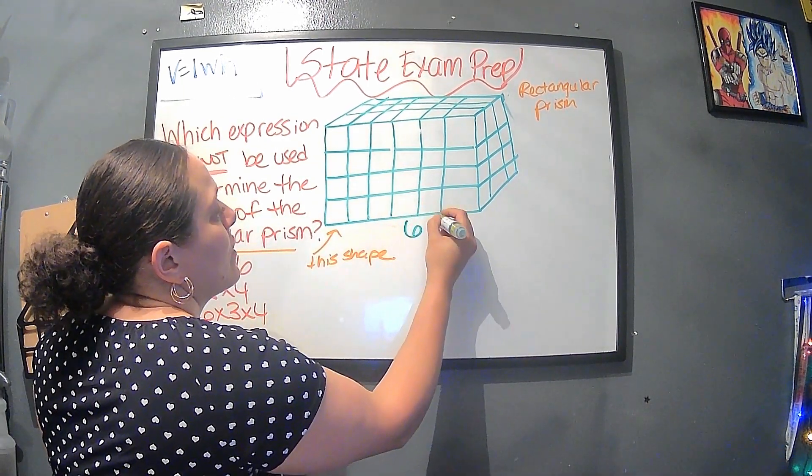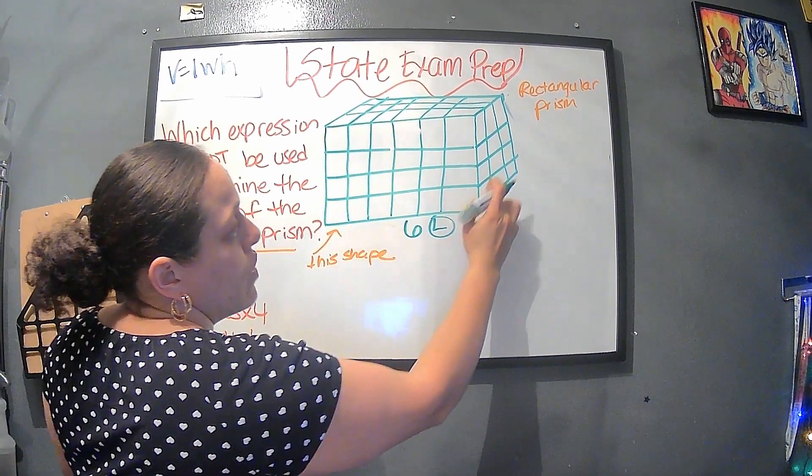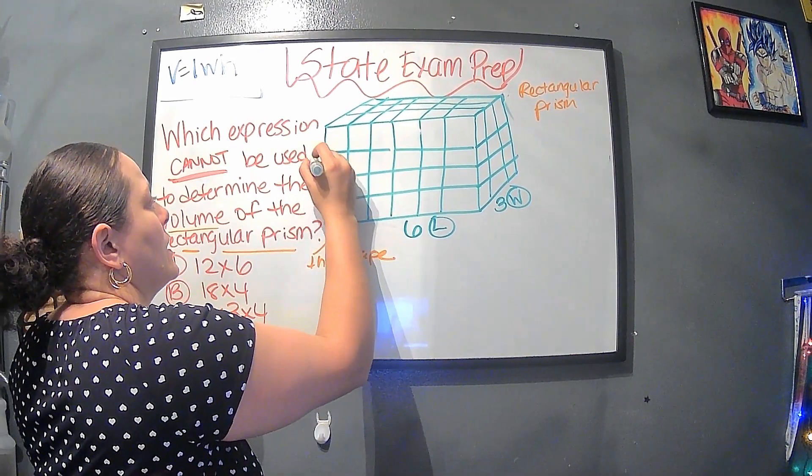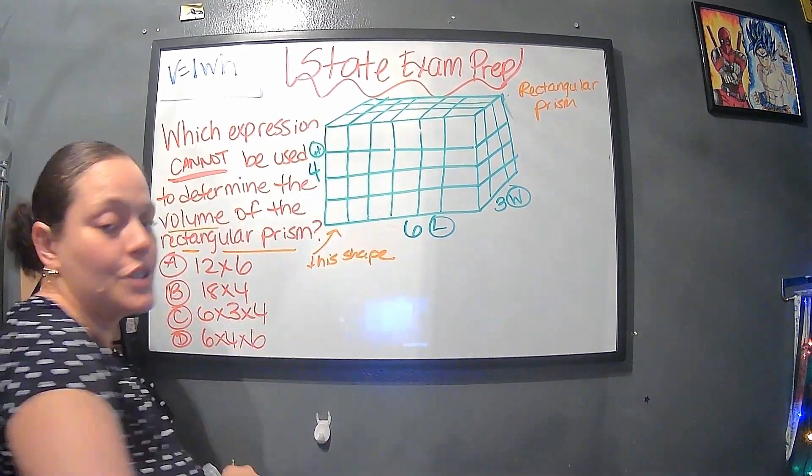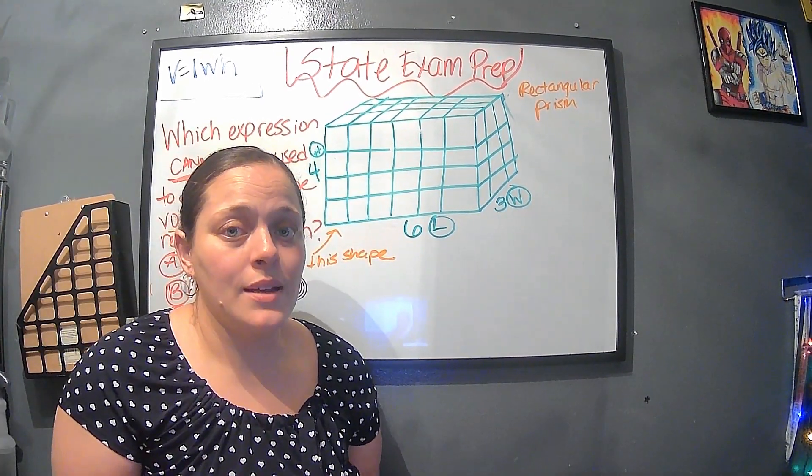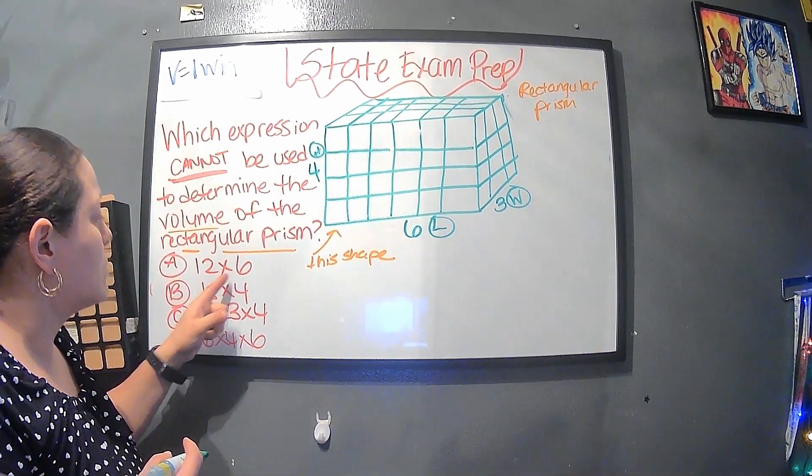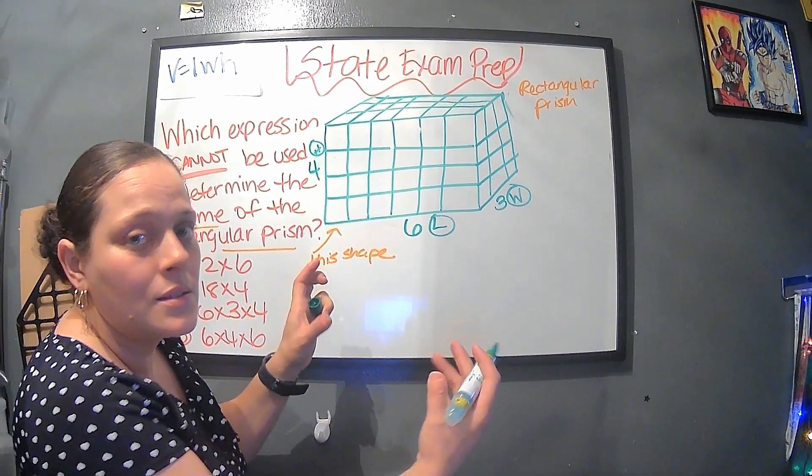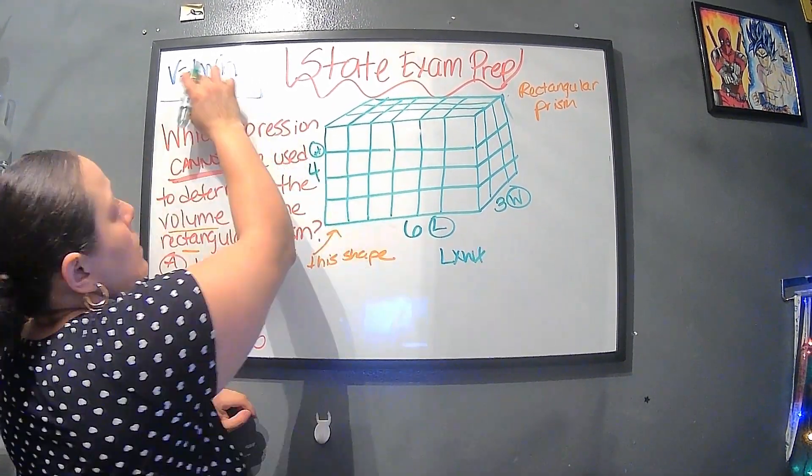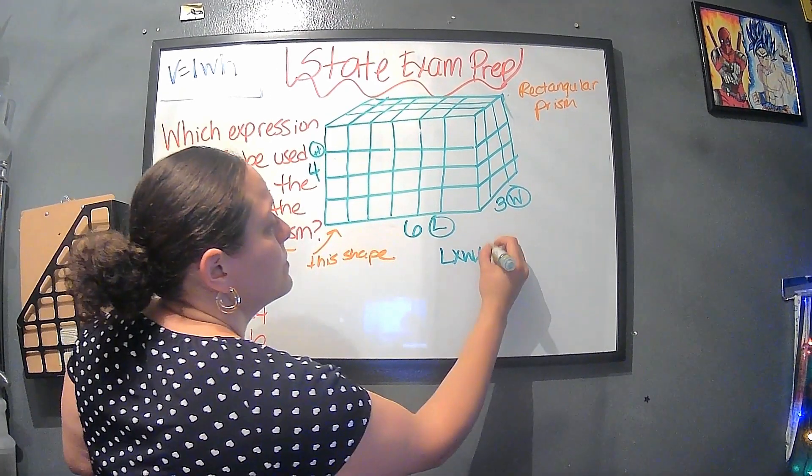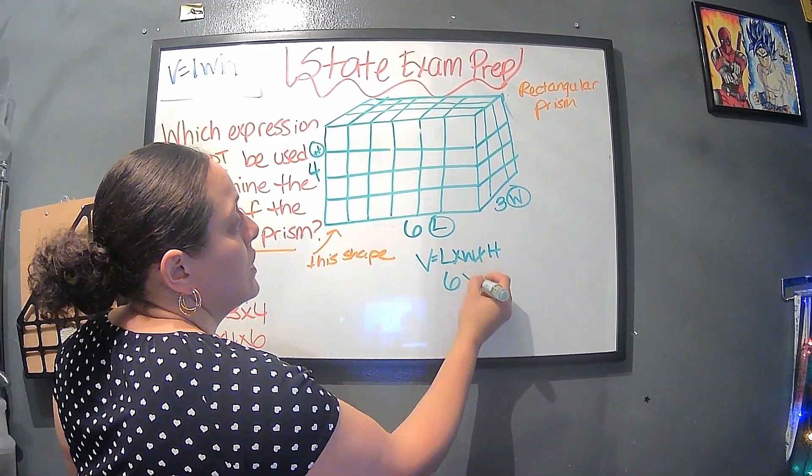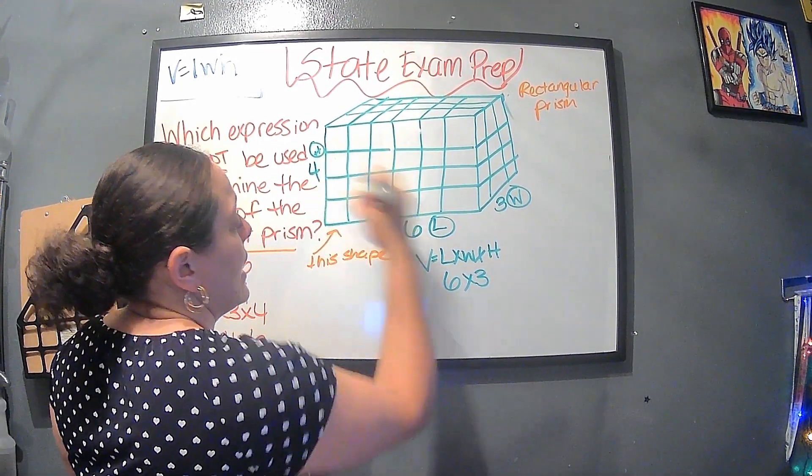Now we know we have six here, which is the length, so I'll put that in a circle. We have one, two, three, which is the width. One, two, three, four. So four, and then I'll put the H in a circle. So now we know that it's length times width times height. There's many ways you could go about this. You could either go section by section, or you could find out what the volume is and then go that way. If I do length times width times height, the length is six, the width is three, and the height is four.